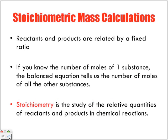Stoichiometric mass calculations. Reactants and products are related by a fixed ratio. If you know the number of moles of one substance, the balanced equation tells us the number of moles of all the other substances. That's why it's important to be able to balance your equation. Because if you do not know how to balance the equation, then your number of moles of this to that to the other is going to be wrong. Stoichiometry is the study of the relative quantities of reactants and products in chemical reactions.